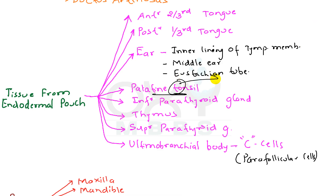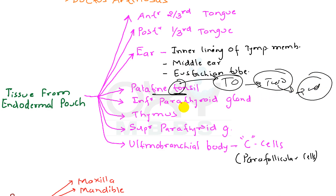Now coming to the palatine tonsil — 'toe' means two, meaning number two. So palatine tonsils are derived from the second pharyngeal arch.